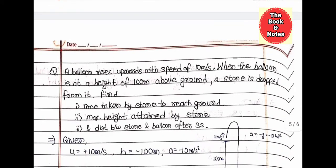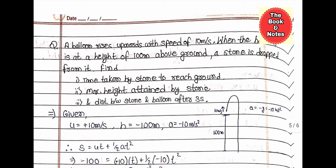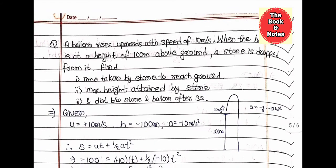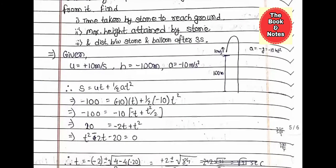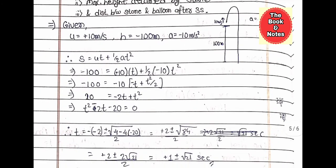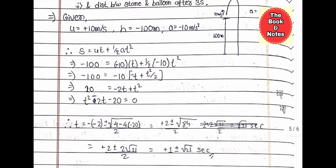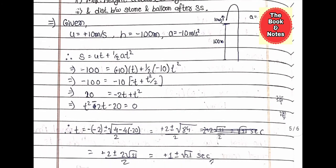Next question: a balloon rises upward with a speed of 10 meters per second. When the balloon is at a height of 100 meters above the ground, a stone is dropped from it. Find (1) time taken by the stone to reach the ground, (2) maximum height attained by the stone, and (3) distance between the stone and the balloon after 3 seconds. The answer is shown — try to solve it yourself or take help from the solution.